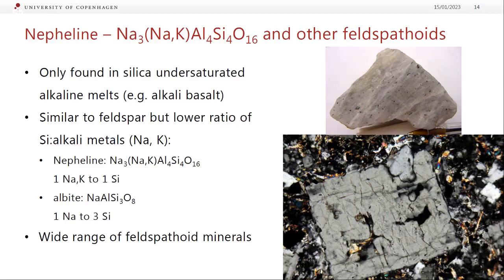Nepheline and other feldspathoids — I don't expect you to learn too much about these, except to know that they're characteristic of silica-undersaturated alkaline melts, such as alkali basalts and all the things that crystallize from those. They are similar to feldspar, but they have a lower ratio of silica to alkali metals. Nepheline has four sodiums for every four silica, so roughly one sodium or potassium to every silica, compared to albite which has only one sodium for every three silica. In these alkali basalts we have much higher alkalis and generally lower silica, and that's what causes us to crystallize these feldspathoids.